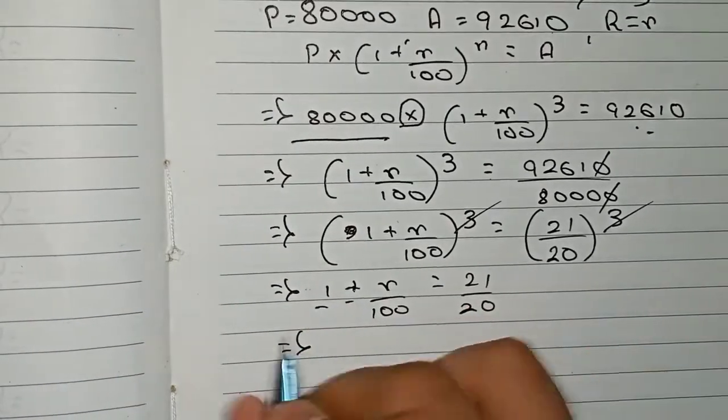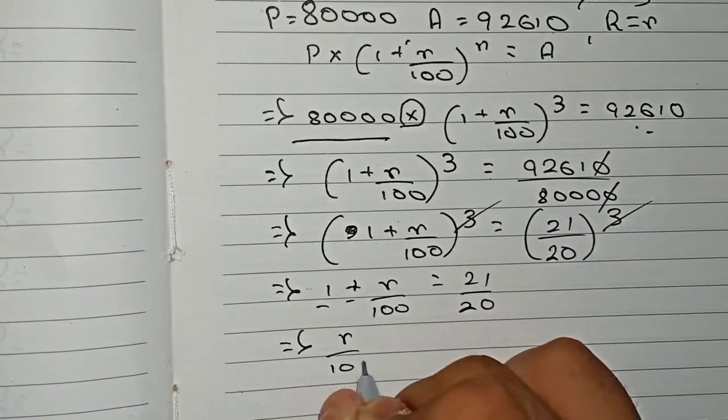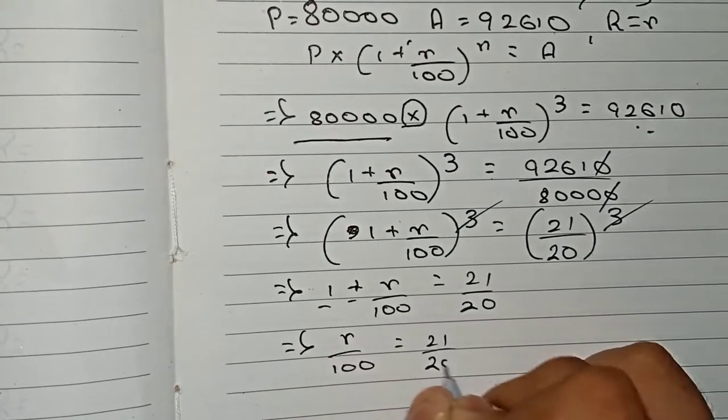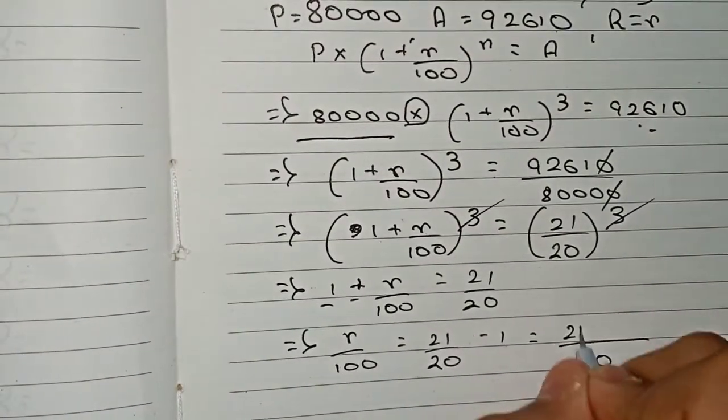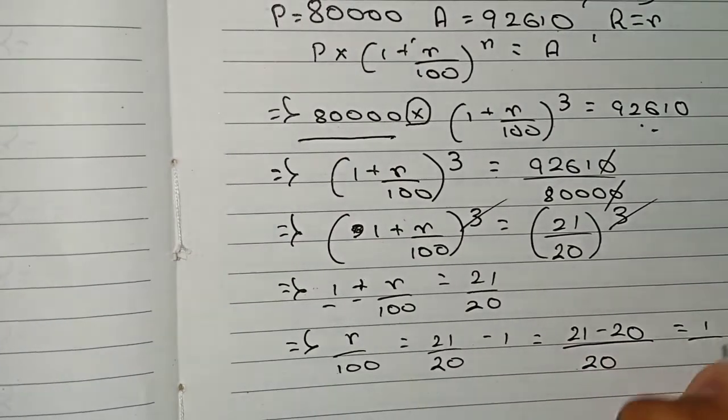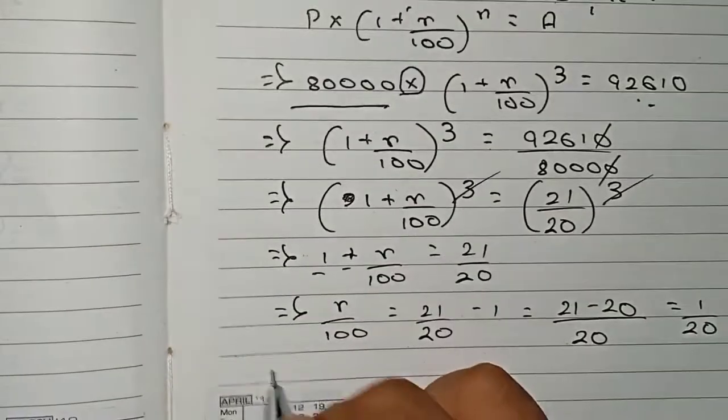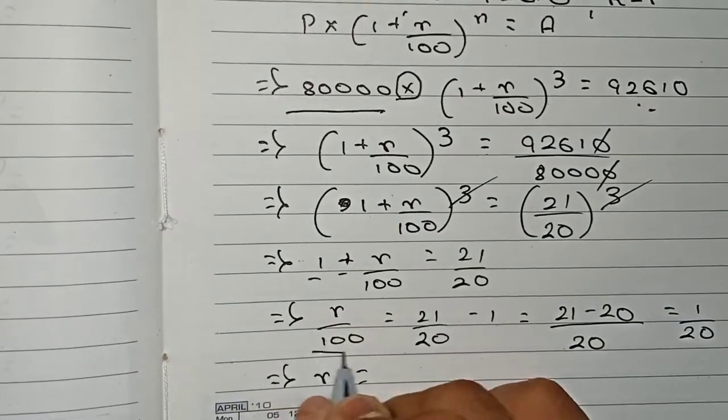So r/100 equals 21/20 minus 1. Take 20 as the denominator, so 21 minus 20 equals 1/20.